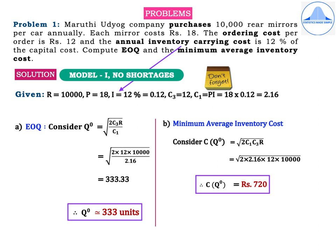Identifying the terms: R = 10,000; purchase cost P = 18; ordering cost C₃ = 12; annual inventory cost I = 12% = 0.12. C₁ is calculated using the formula P × I — whenever the annual inventory carrying cost is given as a percentage, C₁ = P × I. So C₁ = 18 × 0.12 = 2.16.